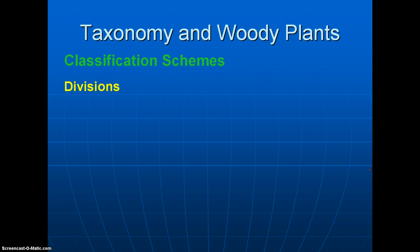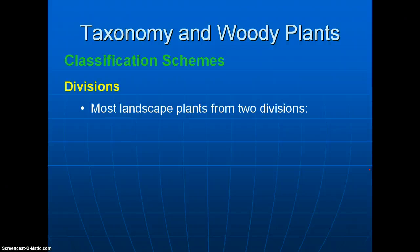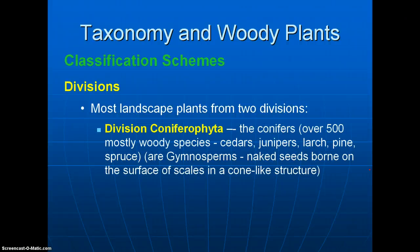Let's take a look at classification schemes. The first category we often encounter is what are called divisions. Most landscape plants come from two divisions. One is the division Coniferophyta, which contains all the conifers — over 500 mostly woody species, things like cedars, junipers, pines, and spruces.